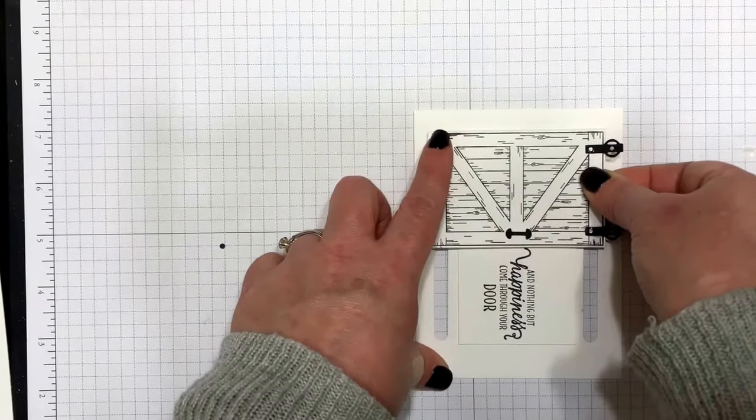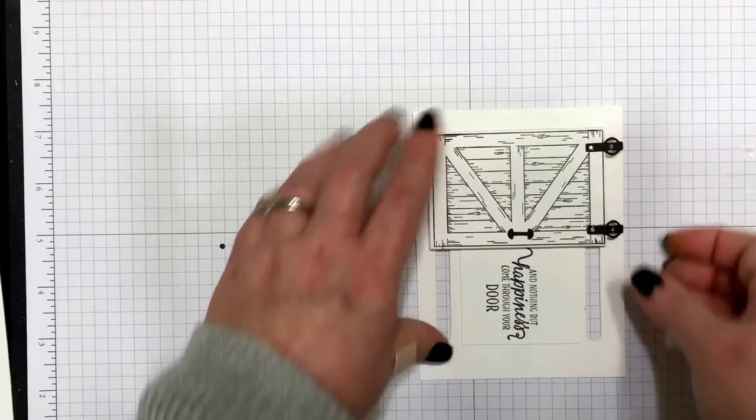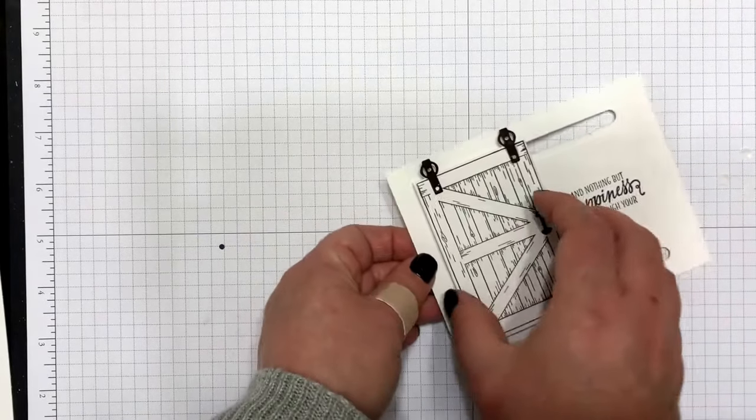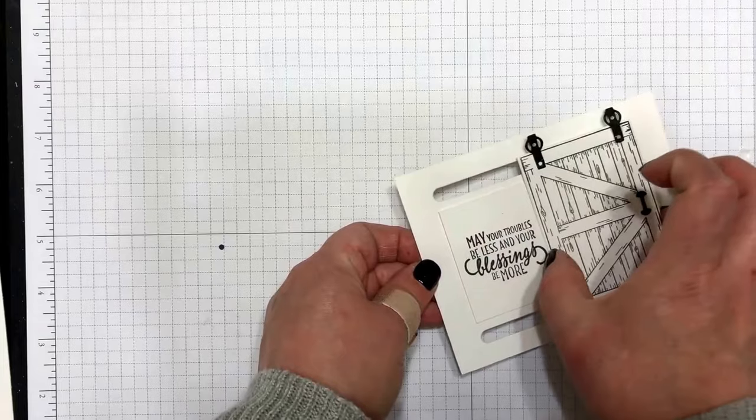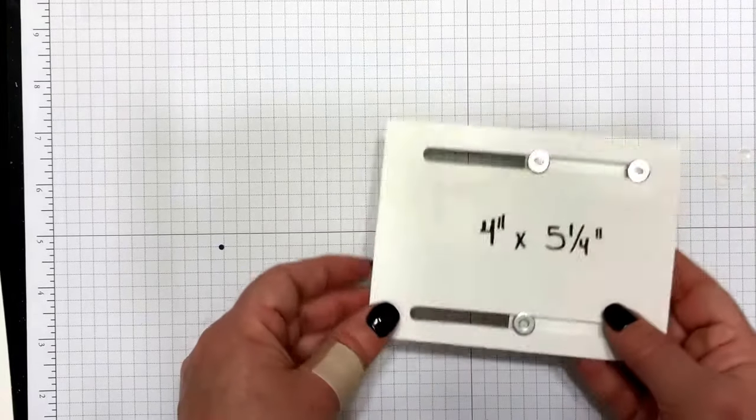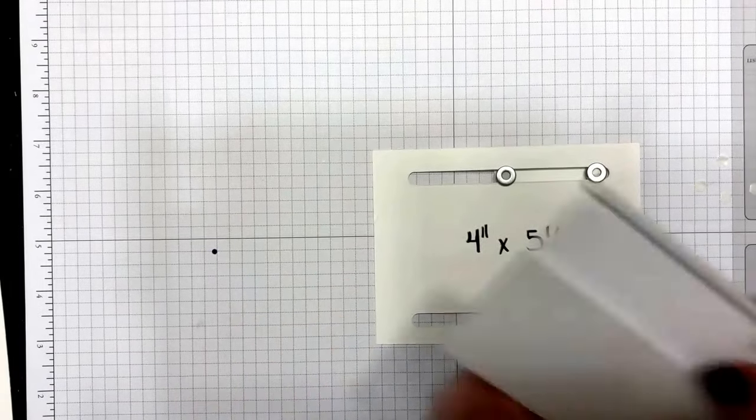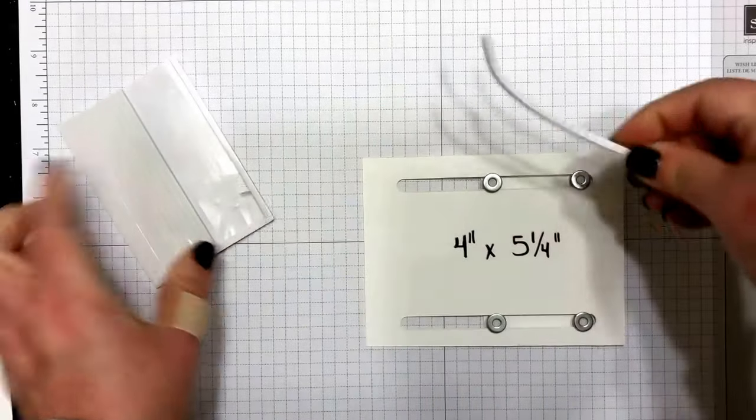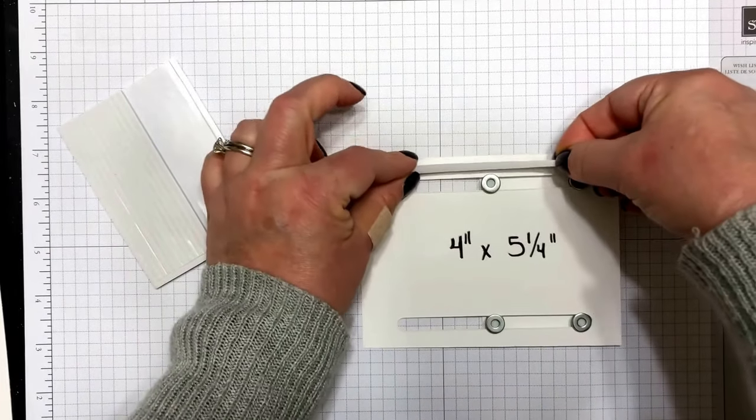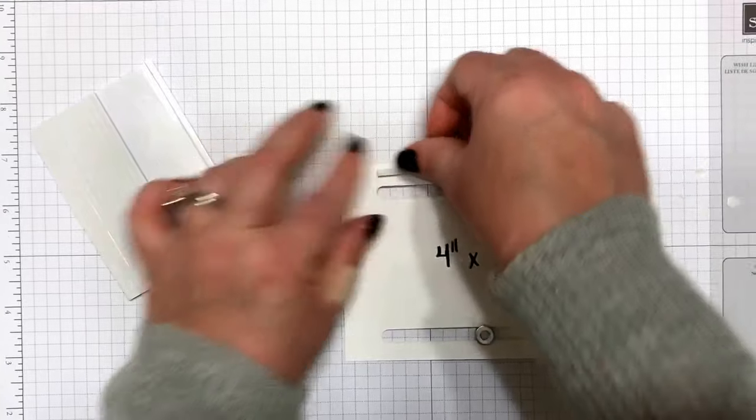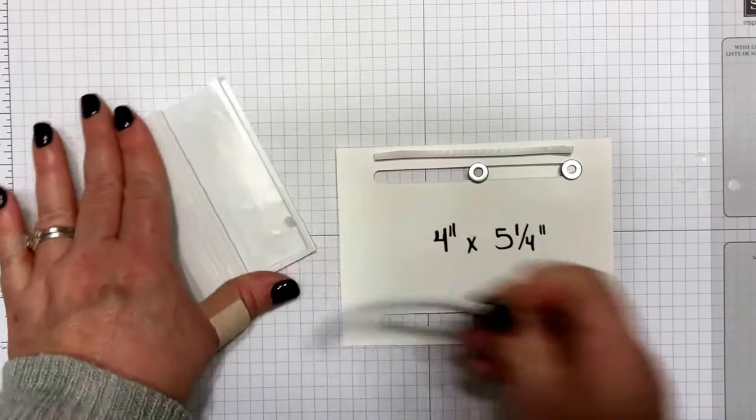Okay, so that is our basic mechanism there. And then as a final step, I'm going to add some dimensional strips, and I'm just going to put one at the top and one at the bottom here.